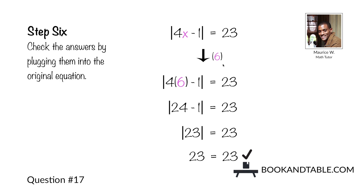Check the second answer, x equals 6: 4 times 6 is 24, 24 minus 1 is 23, and the absolute value of 23 is 23. So 23 equals 23 confirms that x is also equal to 6. That wraps up practice set number one for our solving equations chapter. If you have any follow-up questions, feel free to leave them in the comment section or connect with a tutor at BookandTable.com or by downloading our app on the App Store.